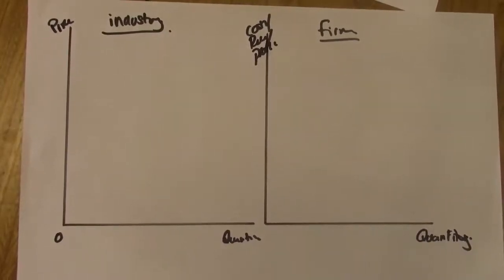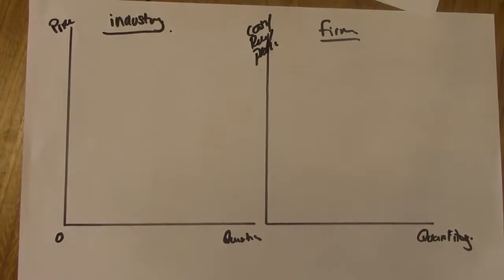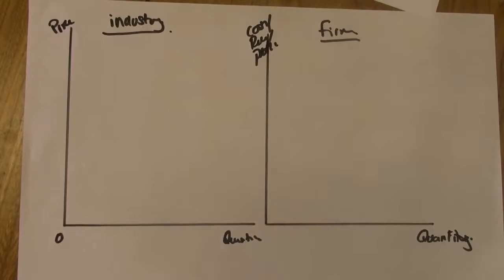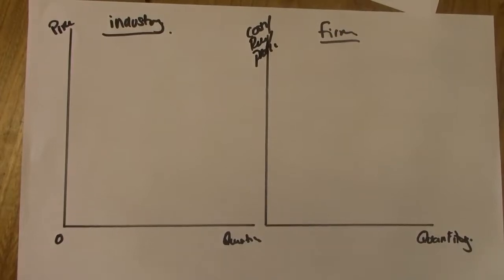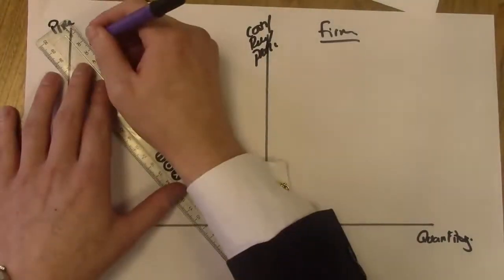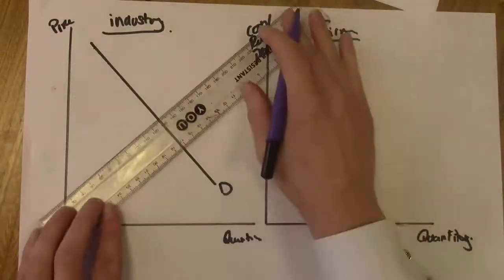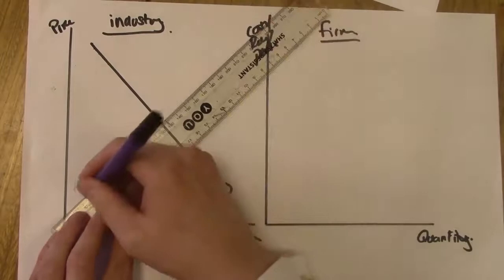For the industry diagram on the left, with perfect competition there is a large number of small firms — all firms are small relative to the size of the industry. The industry diagram is very similar to your supply and demand diagrams from AS: a downward sloping demand curve for the market and an upward sloping supply curve.